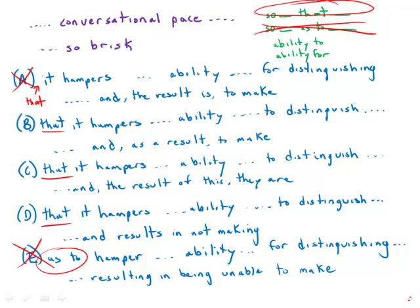The second is the preposition following the word ability: ability to do something, ability for doing something. The first is the correct idiom here as well, and the second one is always wrong on the GMAT. So ability for, that's wrong; ability to, that's correct. So A and E are actually out on two counts.